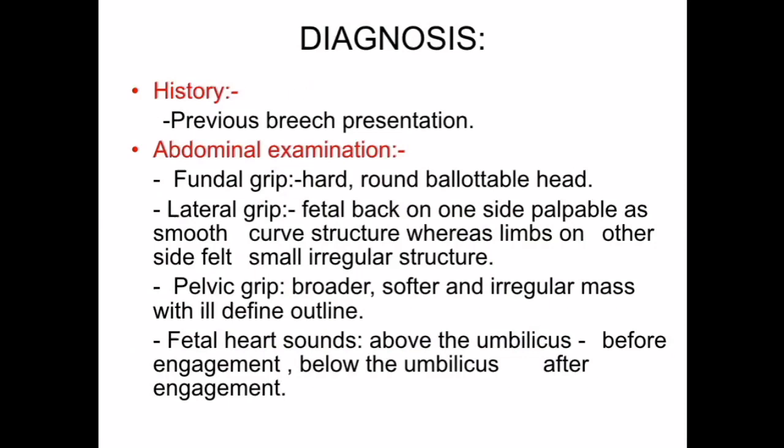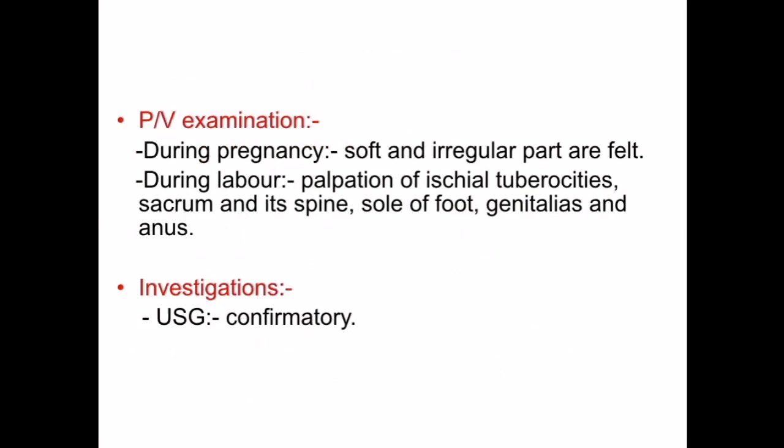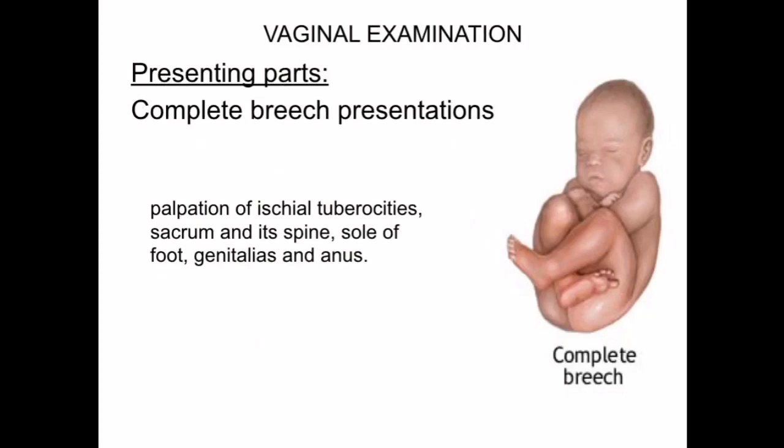Further under diagnosis, pelvic examination during pregnancy will show that soft and irregular fetal parts are felt. During labor, palpation of the ischial tuberosities, the sacrum and its spine, and the genitalia and anus can be identified on vaginal examination.